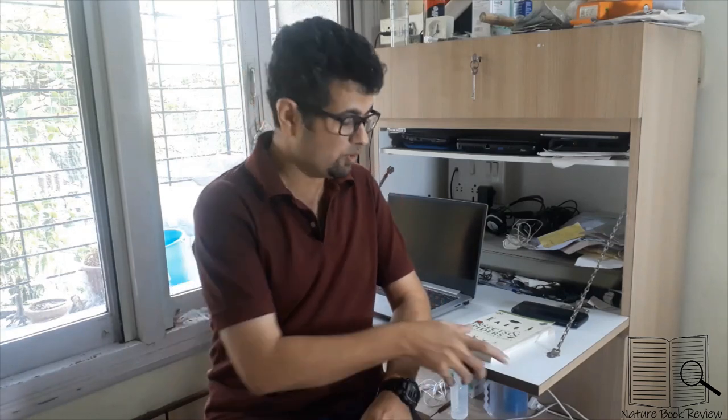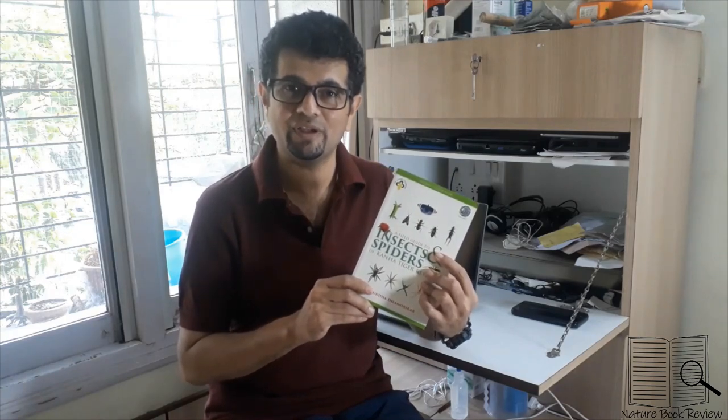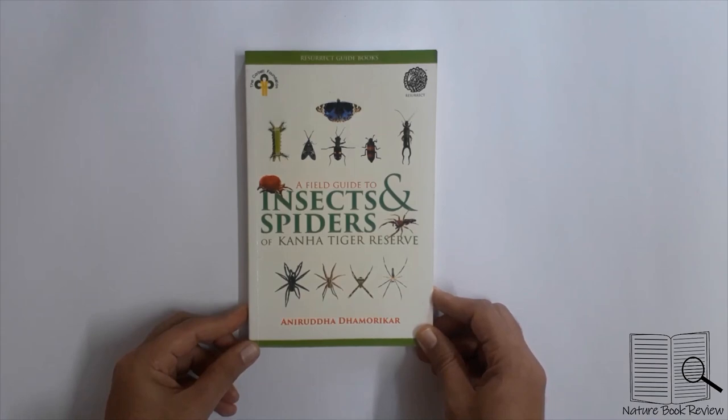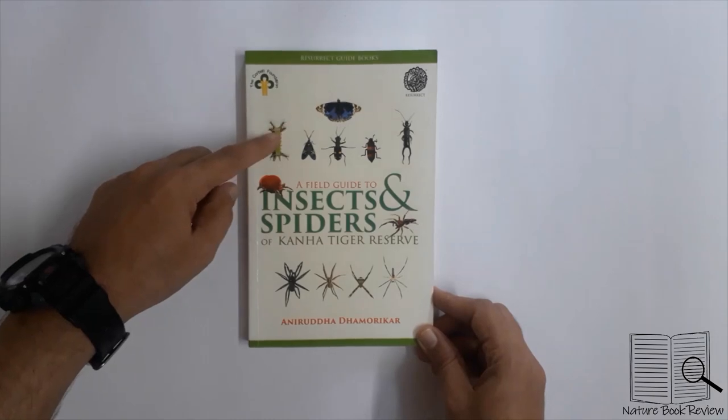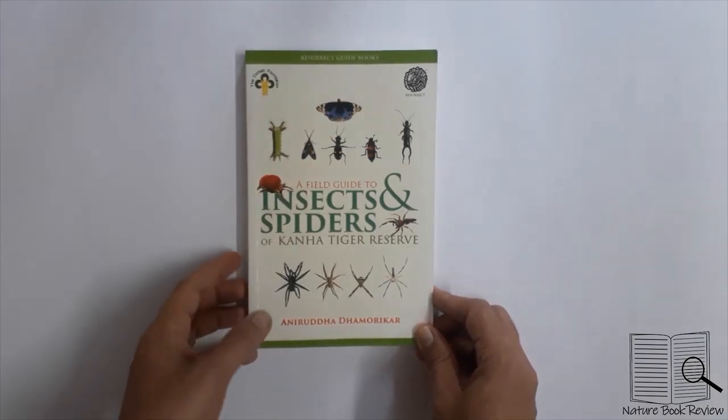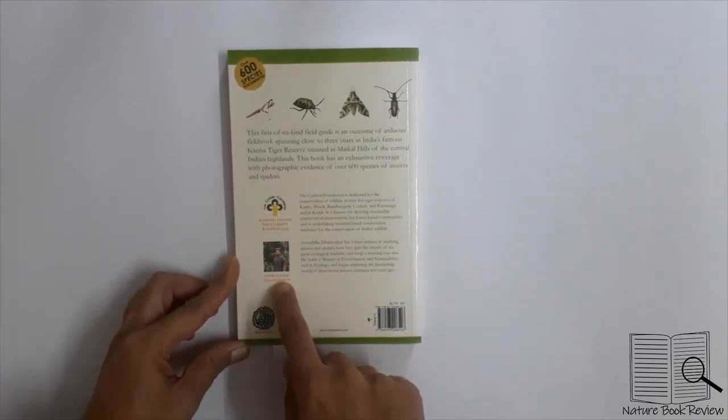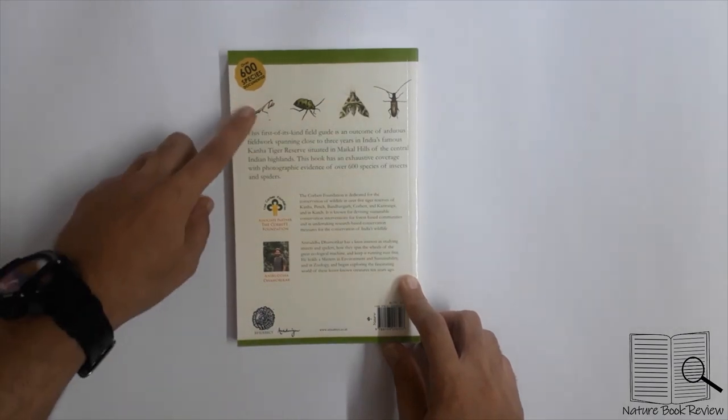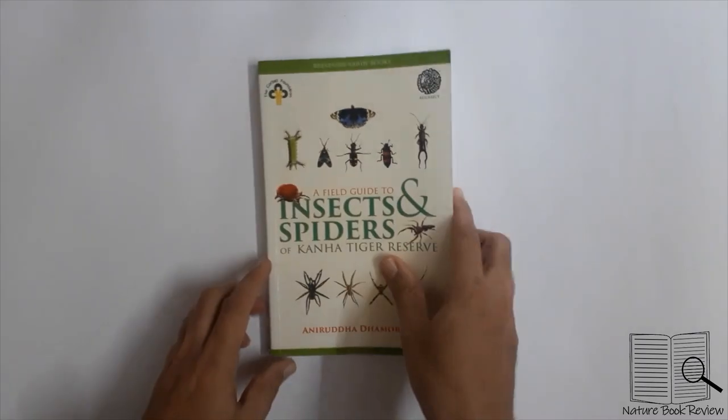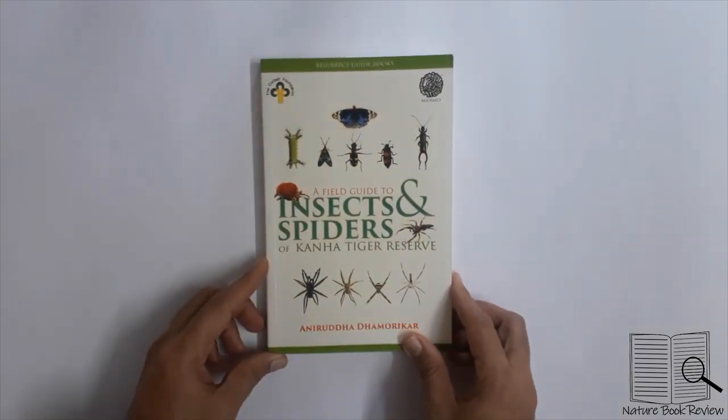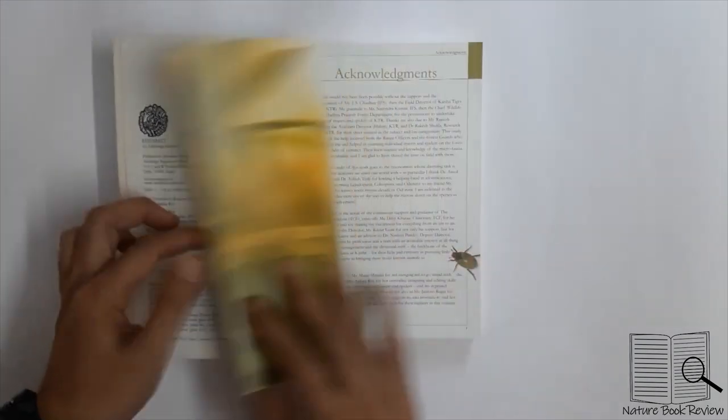There's one book called Insects and Spiders of Kanha Tiger Reserve by Aniruddha Dhamorikar. The front page shows the title, author name, illustrated insects and spiders, and publisher. On the back side there's a photograph of the author, and it claims to have around 600 species photo documented for the first time for Kanha Tiger Reserve. Most photographs have been taken by the author himself, very few from others who have been credited.